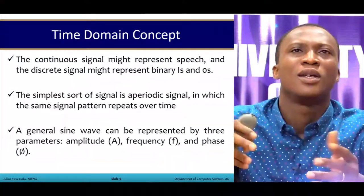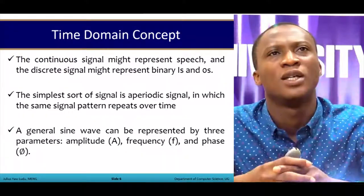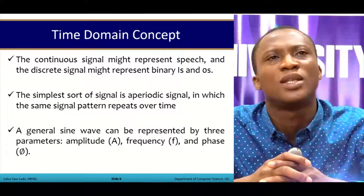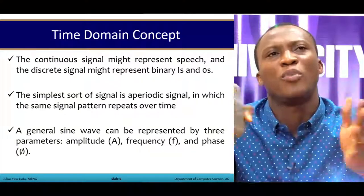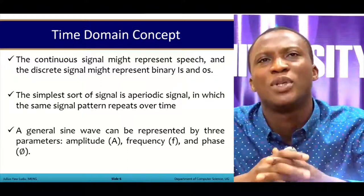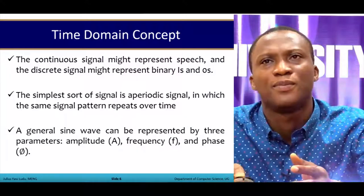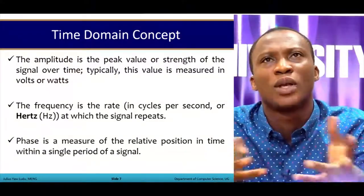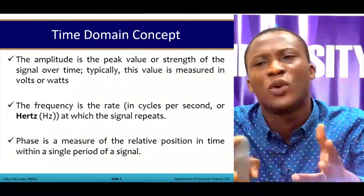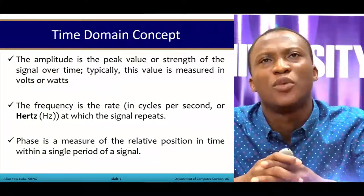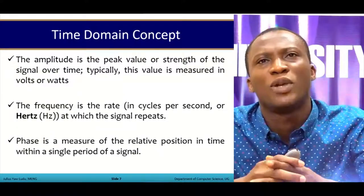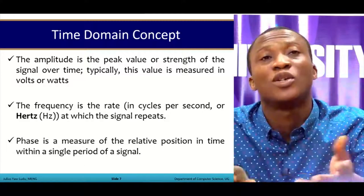With speech, it's continuous — it's in the form of waves. The simplest sort of signal is known as a periodic signal, in which the same signal pattern repeats itself over time over one period. A general sine wave can be represented by three parameters: amplitude, frequency, and phase. The amplitude is the peak value or strength of the signal over time, measured in volts or watts. Frequency is the rate at which the signal repeats itself, measured in hertz (cycles per second). Phase is a measure of the relative position in time within a single period of a signal.